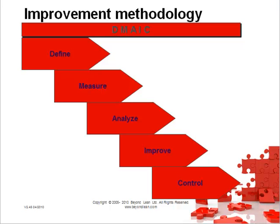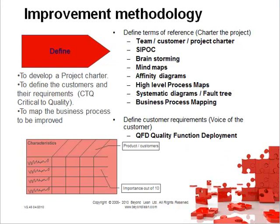The methodology we use for this is known as DMAIC, which stands for Define, Measure, Analyze, Improve, and Control. The first part is Define — this is about defining your problem and what exactly you're trying to do. Pull a project charter together, define customers and their requirements, and map the business processes we're going to look at. Tools used in the Define phase include Team Customer Project Charter, SIPOC, Brainstorming, Mind Maps, and defining customer requirements using Voice of the Customer.